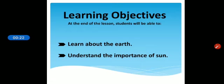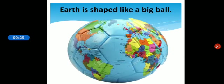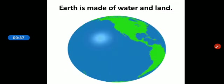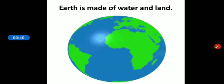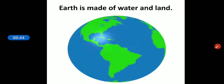Students, we live on Earth. Earth is our home. It's shaped like a big ball, it is a sphere. Earth is made of water and land. Blue color shows water and green color shows land.